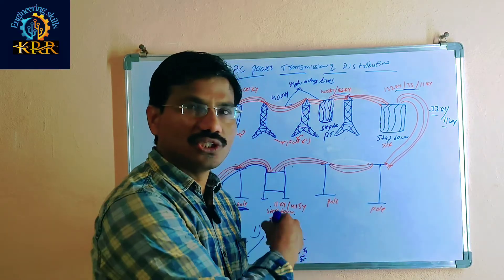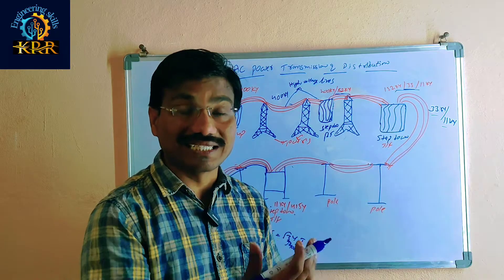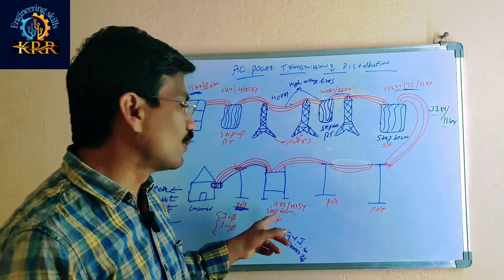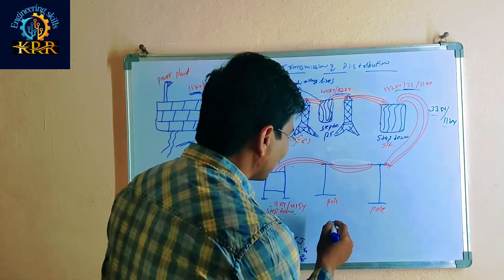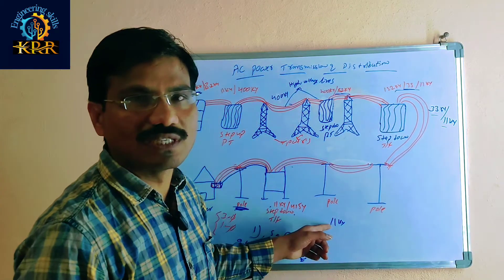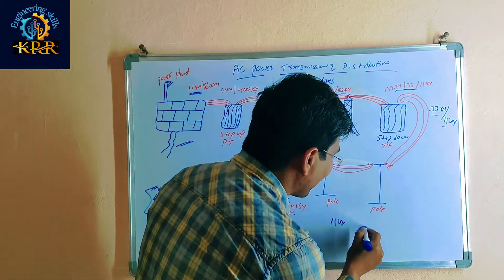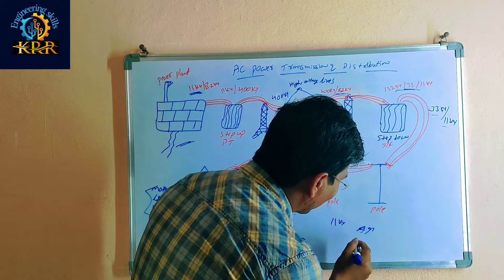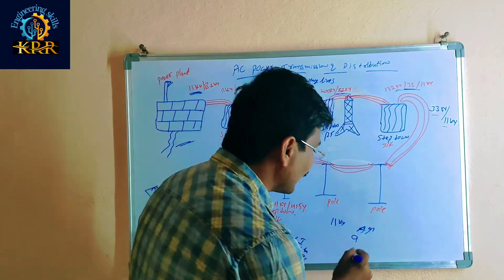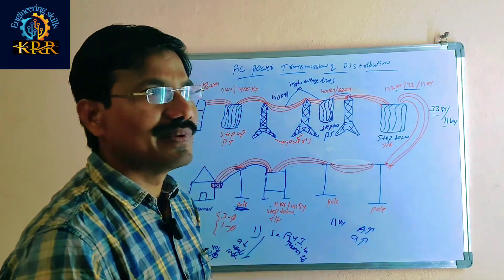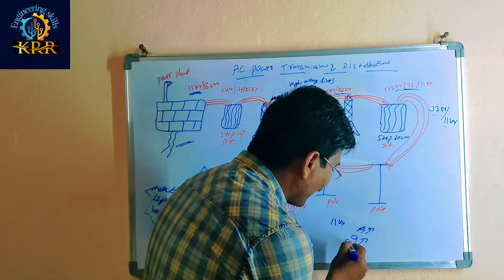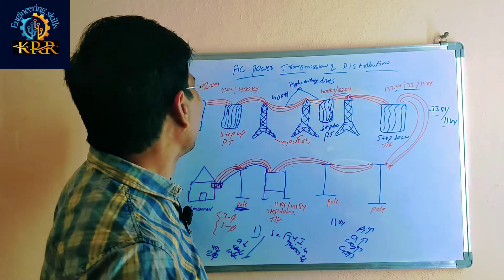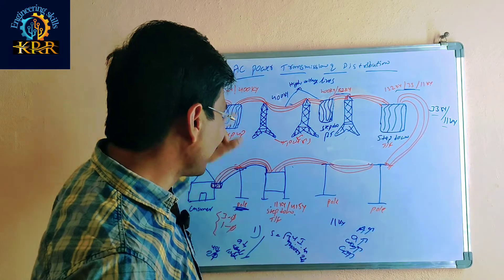If the 11kV generating voltage comes directly nearest to your village, what are the disadvantages? The generating voltage is 11kV, so the current (amps) is high. High current means the conductor cross-sectional area must be large, which increases the conductor's weight.